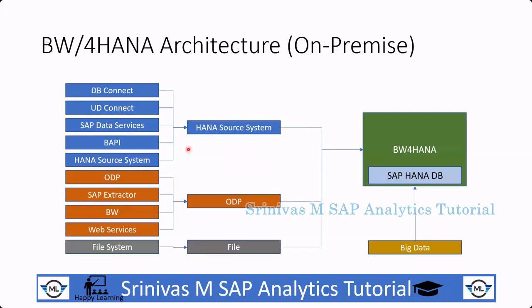SAP simplified connectivity to SAP BW4HANA by replacing old non-SAP connections with HANA source system connection, and SAP connections with the ODP-based connection. SAP also introduced a new connection called big data connection.